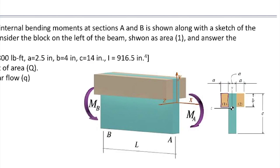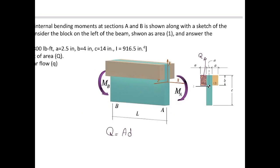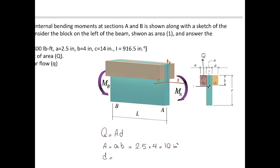For this problem, we separated one segment, and I'm going to determine the Q value for the area where the stress is acting. The area of that segment is simply A multiplied by B. A in this problem is given as 2.5 inches, and B is 4 inches, which gives us 10 square inches.